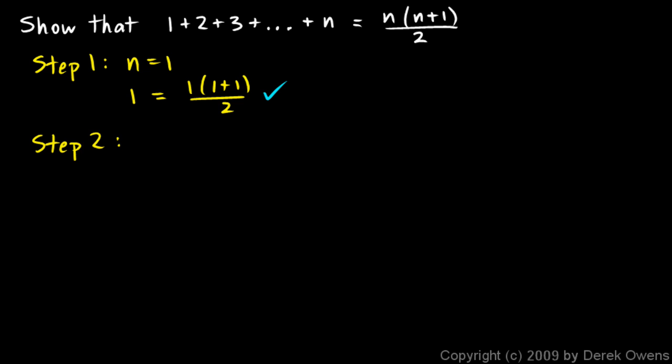Then for step two, we want to assume that this works for some number k, so 1 plus 2 plus 3 plus so on plus k equals k times k plus 1 over 2, and we want to show that if it works for k, then it also must work for k plus 1.